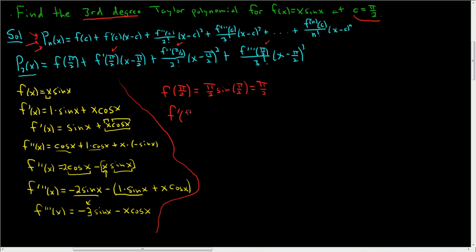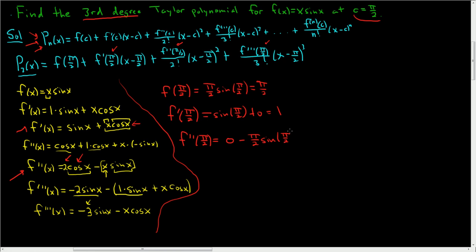For the first derivative at pi over 2: sine of pi over 2 is 1, and pi over 2 times cosine of pi over 2 is 0, so f prime of pi over 2 equals 1. For the second derivative at pi over 2: 2 times cosine of pi over 2 is 0, minus pi over 2 times sine of pi over 2. Since sine of pi over 2 is 1, f double prime of pi over 2 equals negative pi over 2.